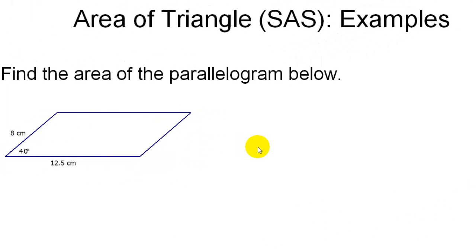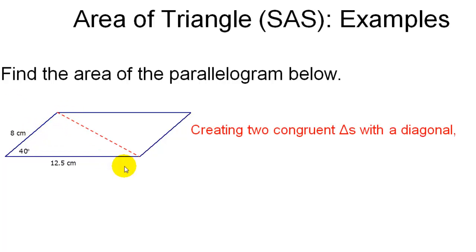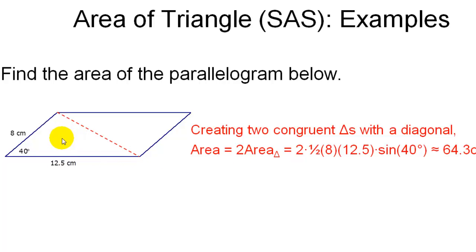How do you find the area of a parallelogram? At first glance that doesn't look like it has anything to do with triangles, but when we developed the area of a parallelogram in geometry, we split it into two congruent triangles. We'll create a diagonal down the middle, splitting this into two congruent triangles, both of which we know an angle and its two included sides on. Therefore, the area of the entire parallelogram is two times one-half times the two sides, 8 and 12.5, times the sine of 40 degrees, which gives approximately 64.3 square centimeters.